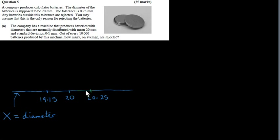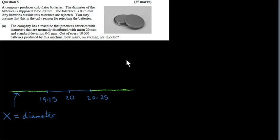So values outside this range are rejected. I will highlight the rejection region. Letting X stand for the diameter of any particular battery — X is a random variable — if X is less than 19.75 or greater than 20.25, then that battery is rejected.